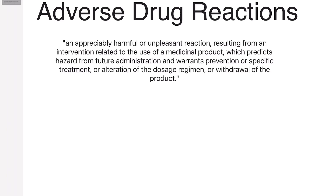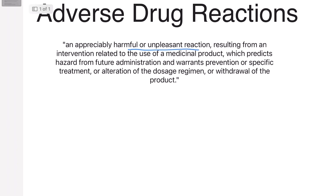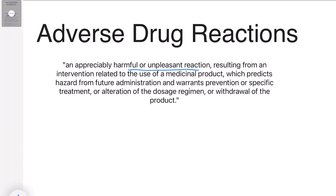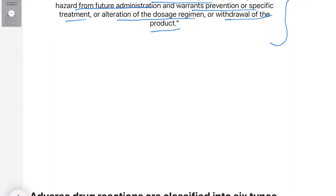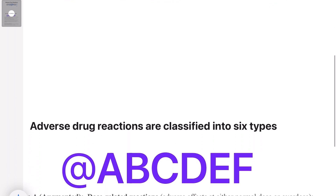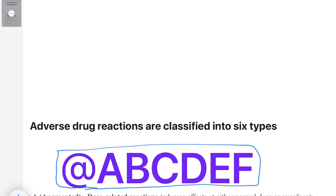Let's start with the definition of adverse drug reactions. Adverse drug reactions are the harmful and unpleasant reactions resulting from an intervention related to the use of a medical product, which predicts the hazard from future administration and warrants prevention, specific treatment, alteration of the dose regimen, or withdrawal of the product. They can be divided into six types, and we'll use the mnemonic A, B, C, D, E, F to remember them.